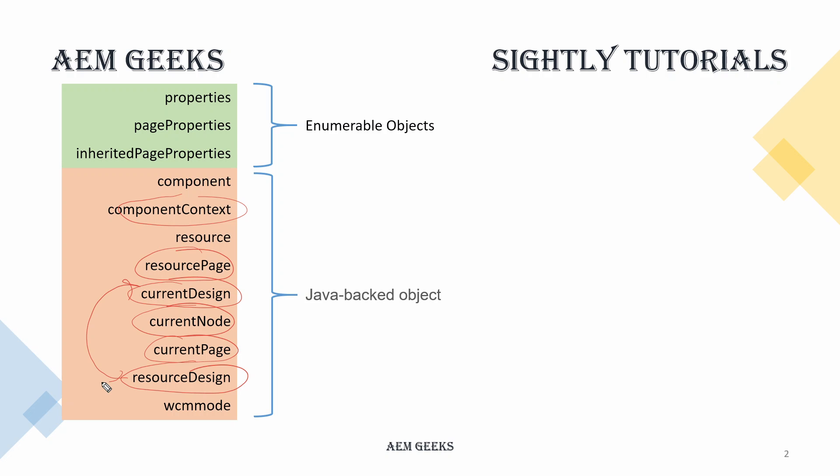'resourceDesign' is the same as 'currentDesign' — whatever the design node is, that is the resource design. 'wcmMode' is an important object — it provides information about which mode you are in. It doesn't provide the mode name directly, but provides methods that return true or false. For example, if you are in edit mode there is a method called 'isEdit' that returns true, and 'isPreview' that returns false, and vice versa in preview mode.